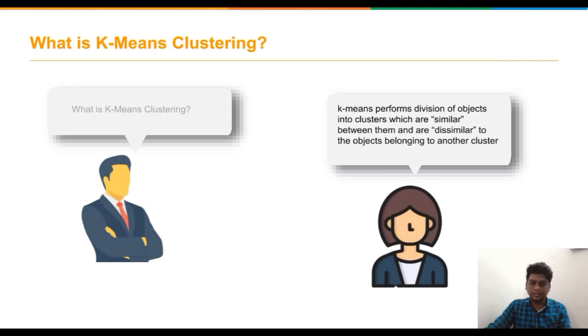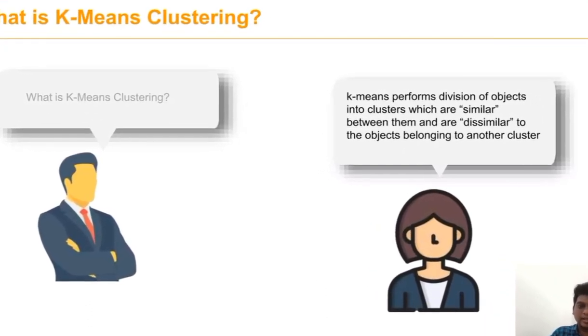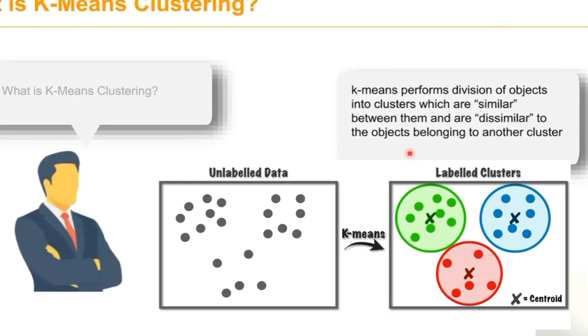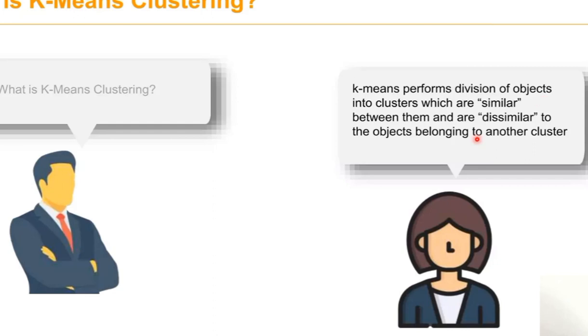Now we can see the working of this algorithm in detail. What do you mean by k-means clustering? Suppose we are having a data set and we are going to divide that data set into clusters. Cluster means the objects which are similar are making into one group and which are dissimilar belonging to another cluster.